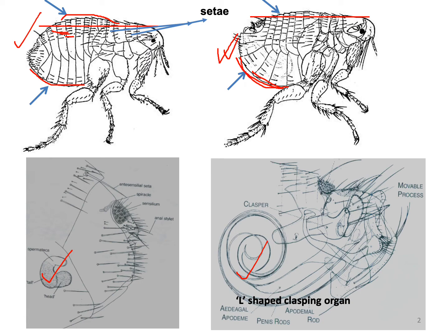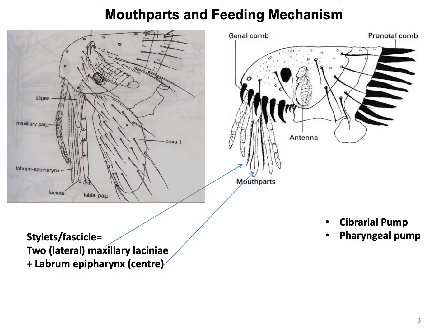The mouth parts include maxillary palps and labial palps; there is no mandible. The labrum is very well developed. With the help of two maxillae, the laciniae, and the labrum, the feeding stylet — or fascicle — is formed. There is also a hypopharynx which is very short. Overall, the mouth part is a piercing and sucking type.